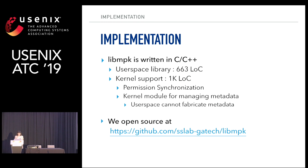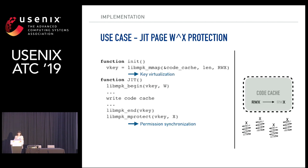LiveMPK is mostly written in C and C++, and we slightly modified the kernel to provide the permission synchronization API and manage metadata. You can find our source code in our repository. For the JIT page protection use case, the livempk_mmap function allocates the code cache and returns a virtual key for it. We can then change the permission of the code cache using livempk_begin and livempk_end in a thread-local way, and we also provide livempk_mprotect for synchronization.